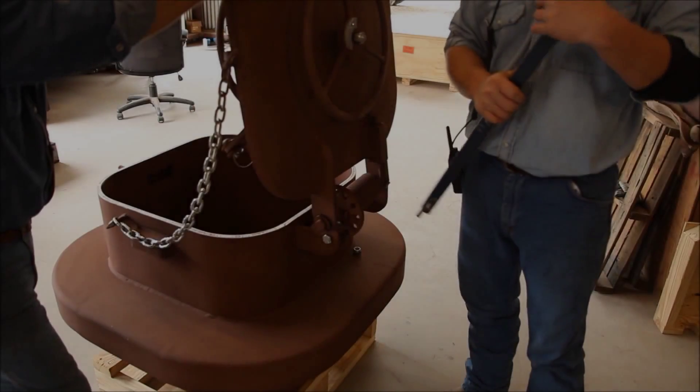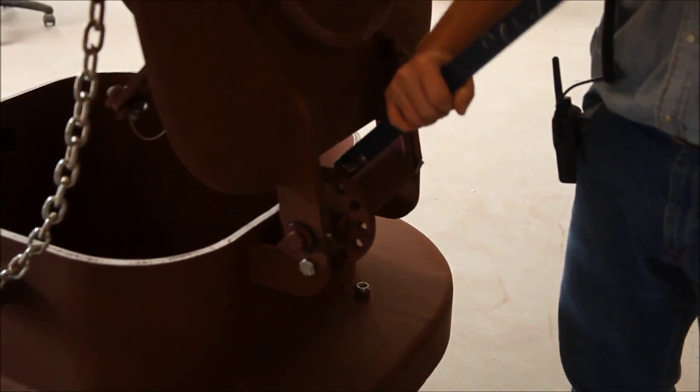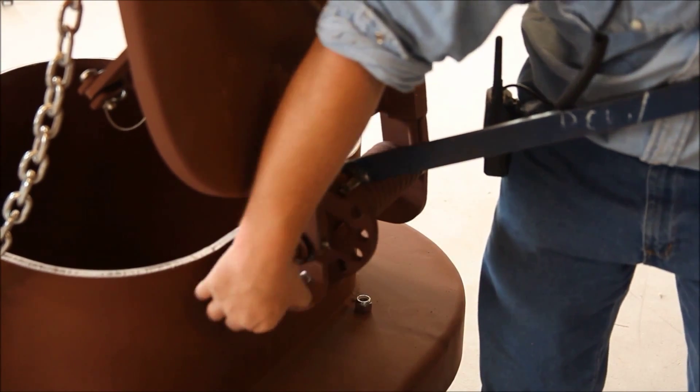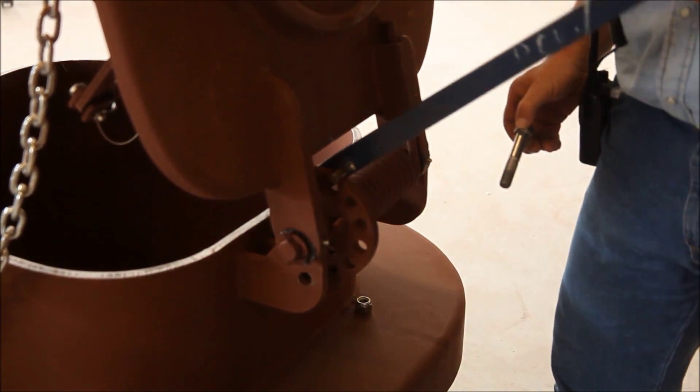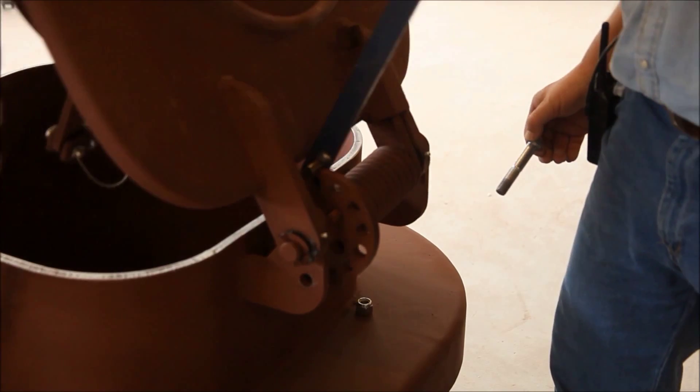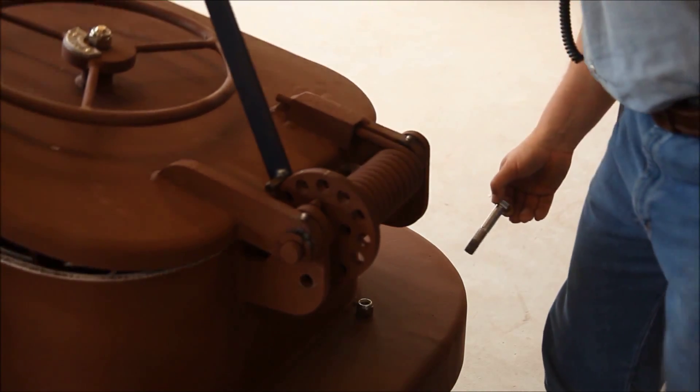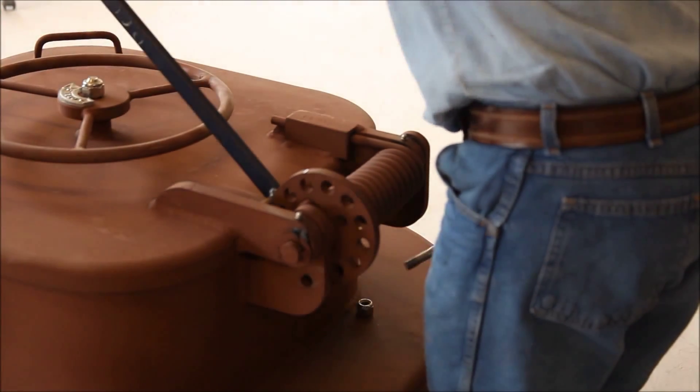For disassembly or maintenance purposes, spring tension may need to be released. Simply perform these steps in the opposite order. Use the spring tension adjustment tool in conjunction with a helper opening and then slowly shutting the hatch.